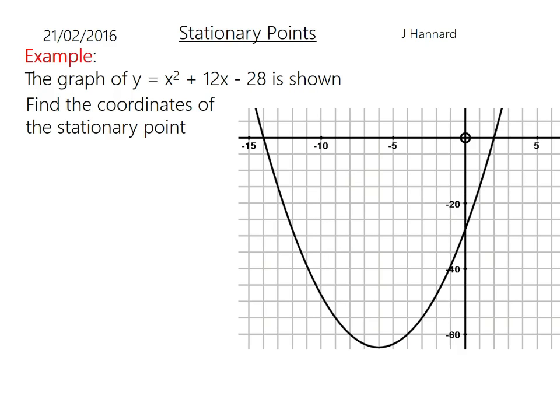Here's another one. The graph of y equals x squared plus 12x minus 28 is shown. Find the coordinates of the stationary point. There it is there. dy/dx power to the front, knock one off the power, so it's going to be 2x plus 12. Set that equal to zero like that, and then we'll take the 12 over the other side and we're going to get x equals minus 6.